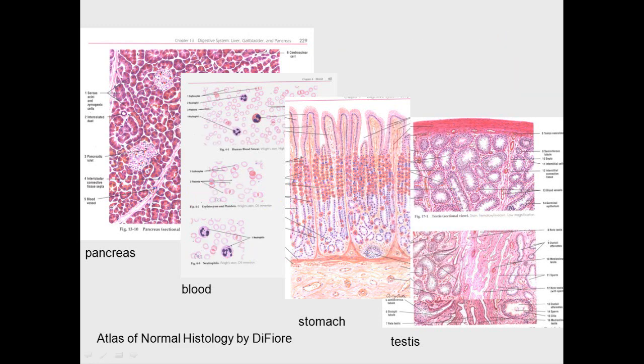The things we see here are the pancreas with a lot of pink and blue, blood cells, the stomach with the parietal cells showing so nice and pink, and then the testis. Those will be the tissues that we will look at today.